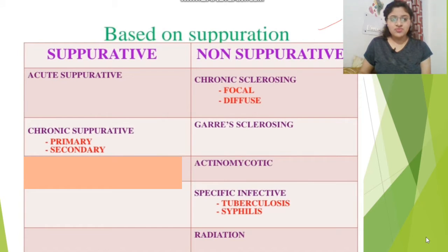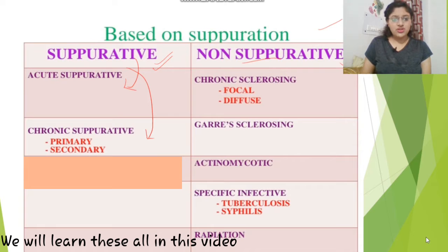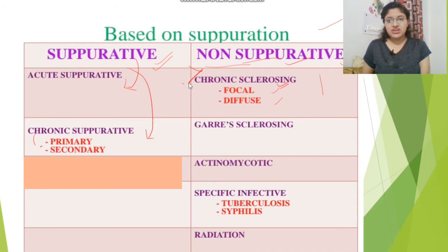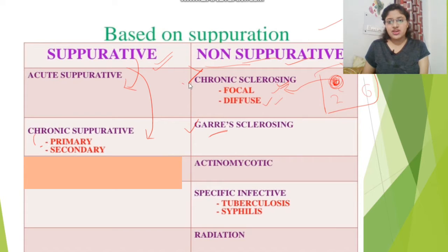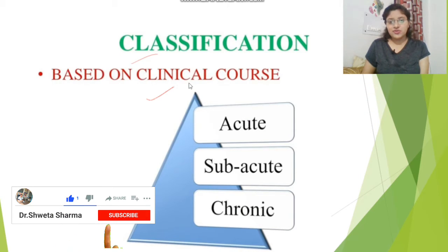The second classification is based on the clinical course. Based on suppuration: first is suppurative and second is non-suppurative. Suppurative is further divided into acute and chronic, and chronic is further divided into primary and secondary. Types of non-suppurative include chronic sclerosing — focal or diffuse — where on radiograph focal radiolucency indicates focal chronic sclerosing, and multiple cloud-like appearances indicate diffuse sclerosing. The second classification based on clinical course includes specific infections like tuberculosis or syphilis.